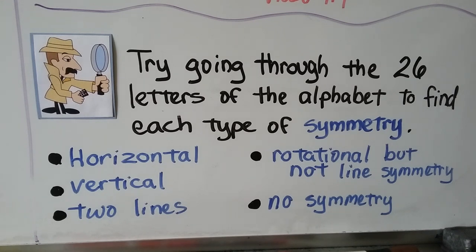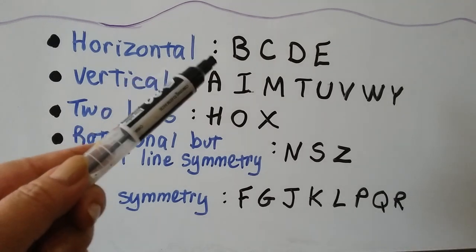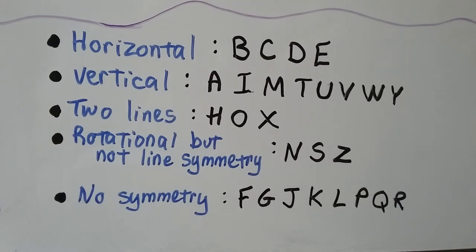You can try going through the 26 letters of the alphabet to find each type of symmetry. For horizontal symmetry we have B, C, D, E. For vertical symmetry: A, I, M, T, U, V, W, and Y. For two lines of symmetry: H, O, and X. For rotational symmetry but not line symmetry: N, S, and Z. And for no symmetry: F, G, J, K, L, P, Q, and R.